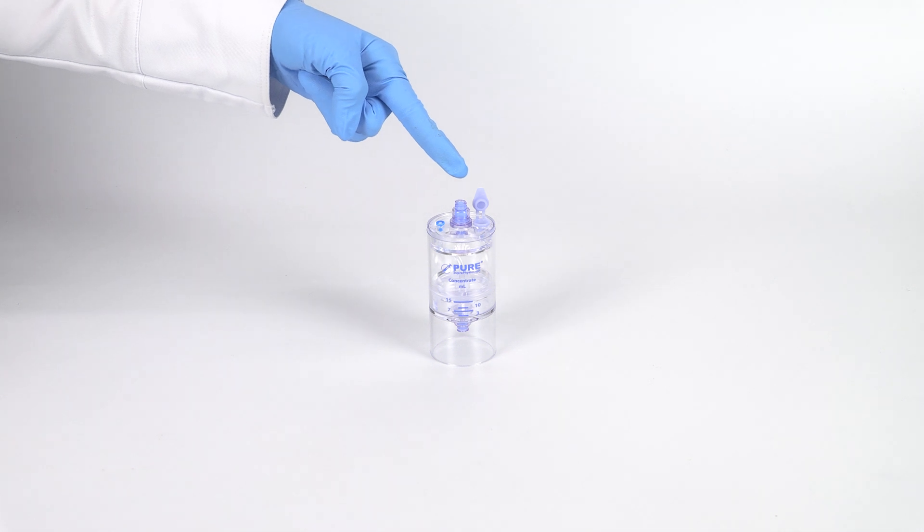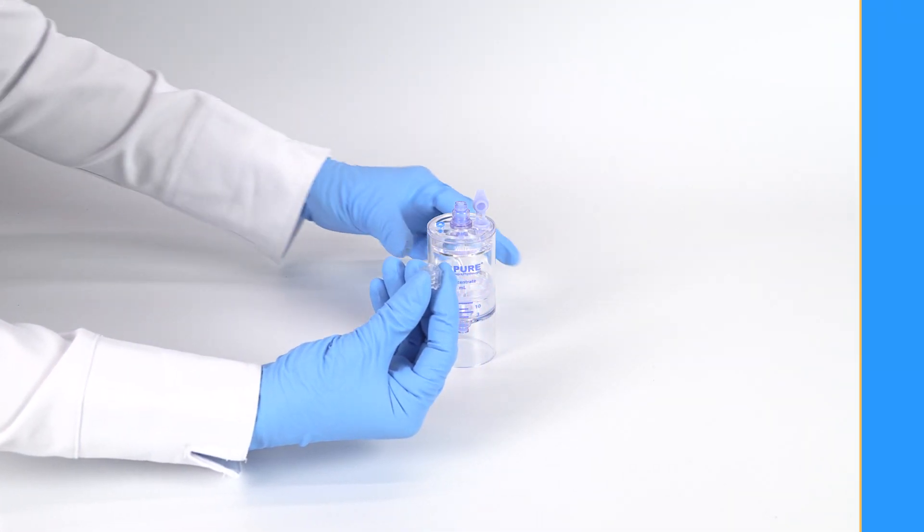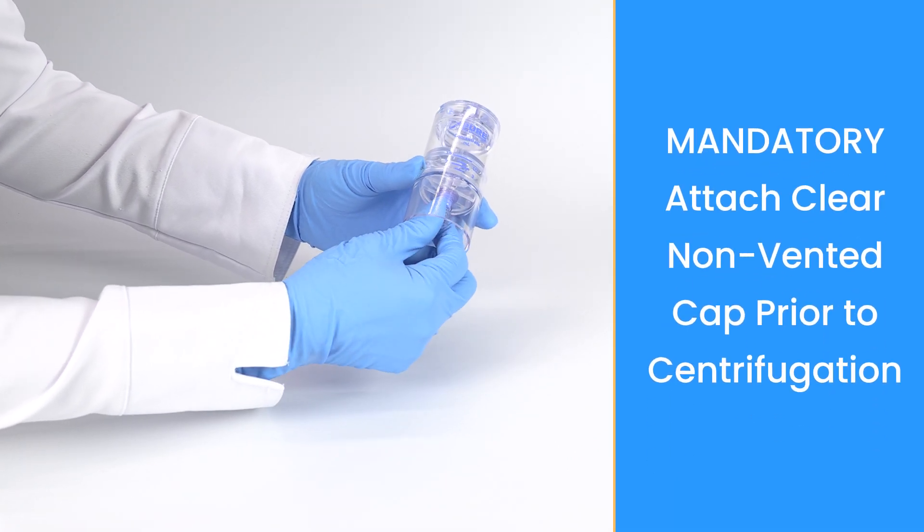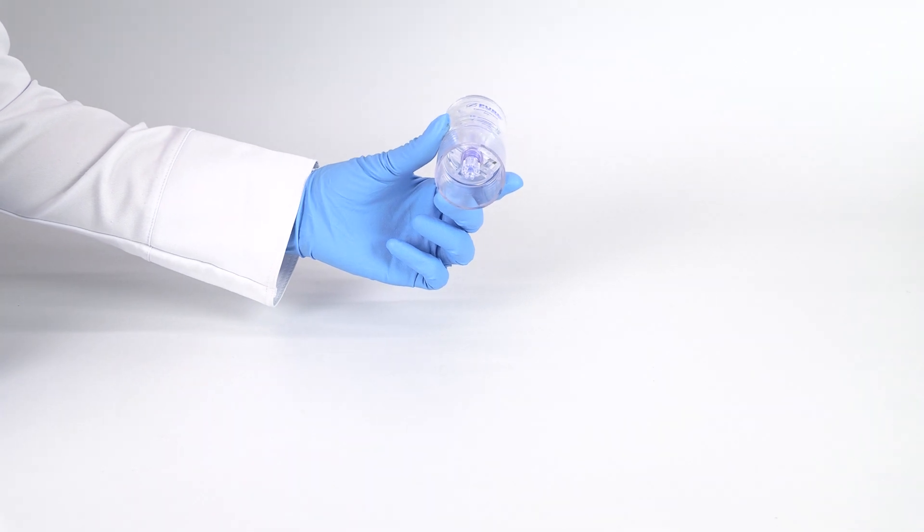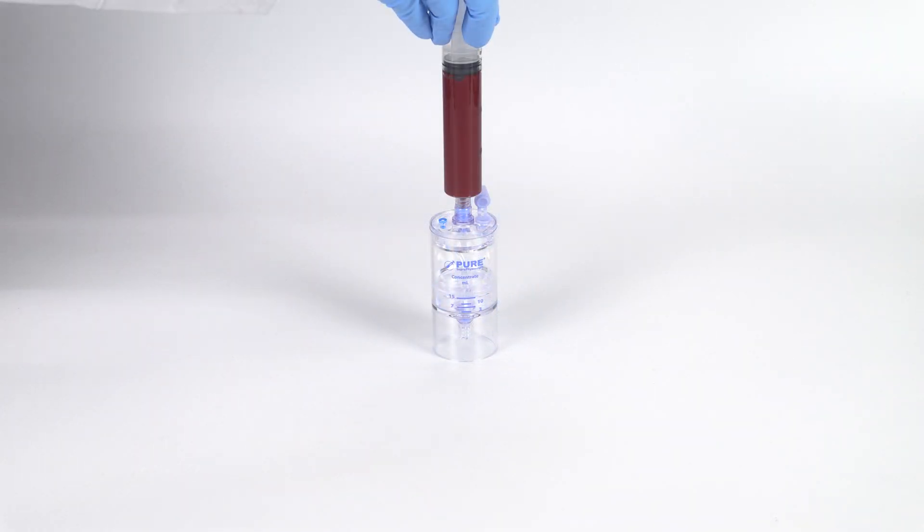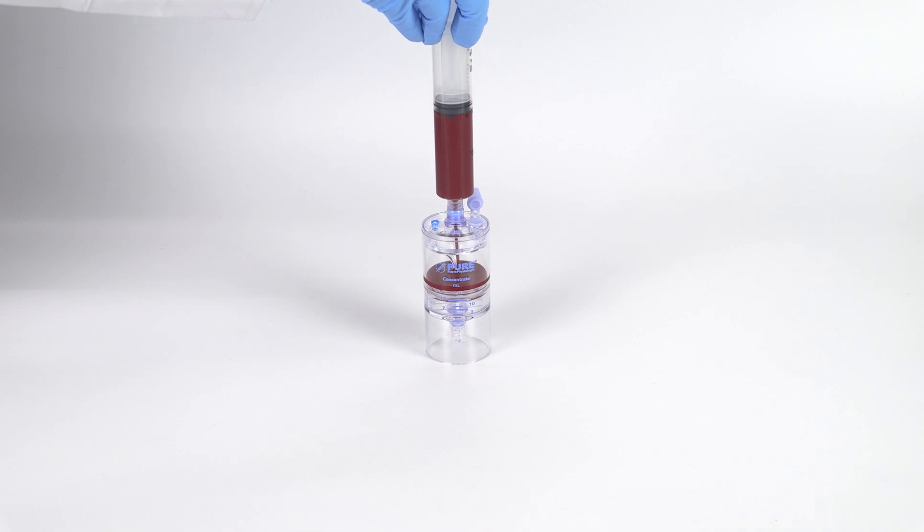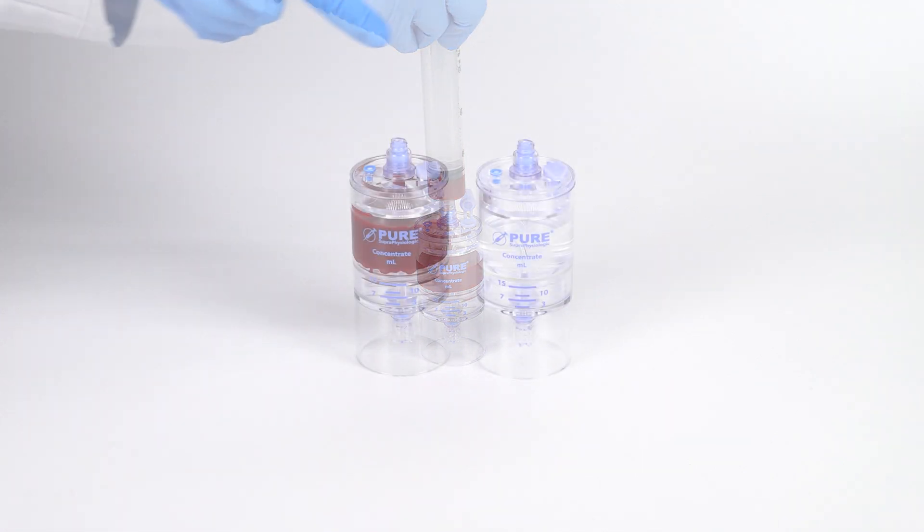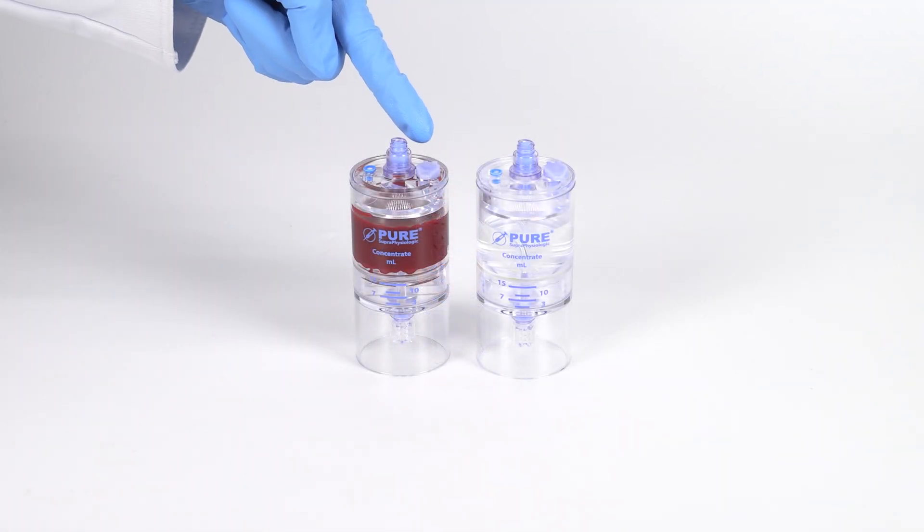Make sure the vent lid is in the open position. As a mandatory step, always attach the clear non-vented cap to the bottom port prior to centrifugation. Attach the 30-milliliter bone marrow syringe to the needleless port and slowly inject into the separator device. When completed, close the vent.